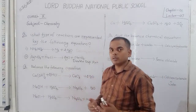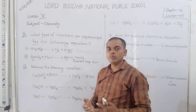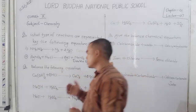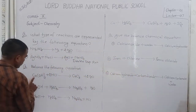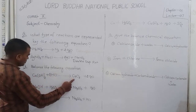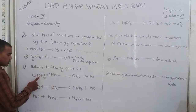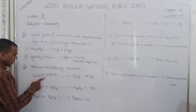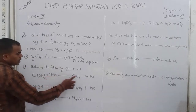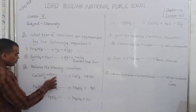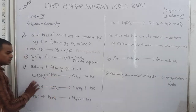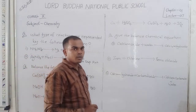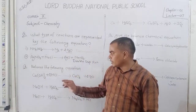Again compare the number of atoms on the left side and right side. Number of calcium: 1 on each side. Number of oxygen: 2 on each side. Number of hydrogen: 4 on each side. Number of chlorine: 2 on each side. That means this equation is a balanced equation.